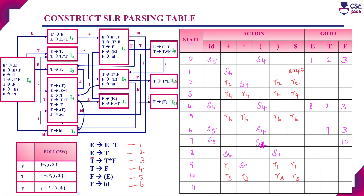For state I11, the final item is F derives open bracket E close bracket dot (production 5). Follow(F) = {+, *, ), $}, so we enter R5 for those columns. We have now entered all reduce moves and completed the SLR parsing table.